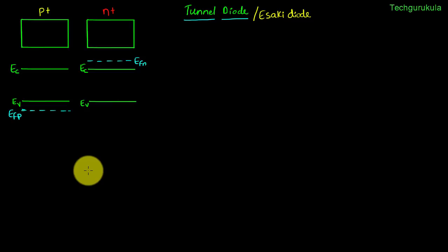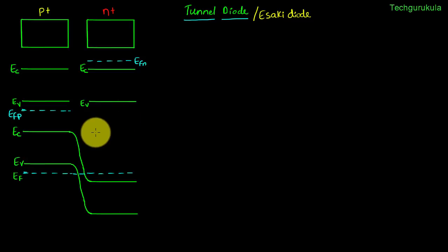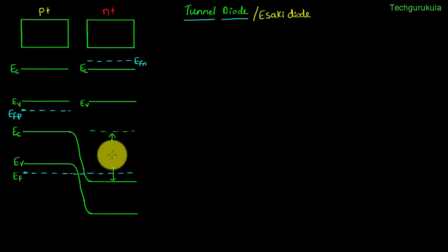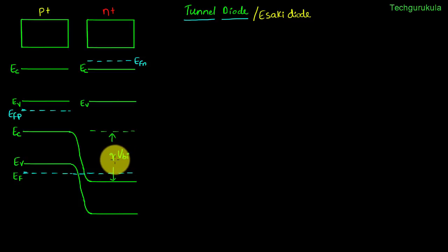Let me draw the energy band diagram for our equilibrium tunnel diode. This is how the energy band diagram would look like, where the overall band bending would be equal to q times the built-in potential of the tunnel diode.